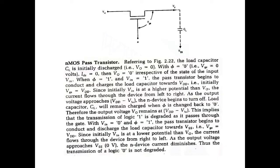For the dynamic case, if you change the control voltage phi to 1 and apply an input voltage of 1, the NMOS transistor begins to conduct. The transistor begins to conduct and charges the load capacitor towards VDD. Initially, VGS equals VDD. Since V-in is at a higher potential than V-out, the current flows through the device from left to right.